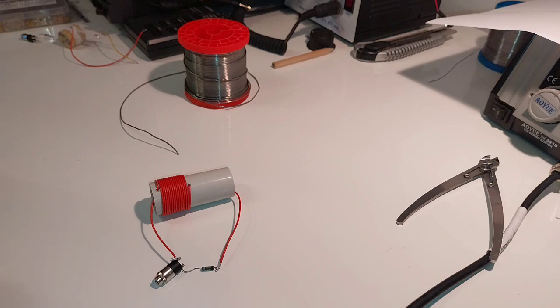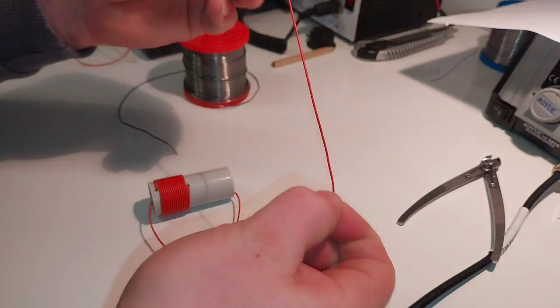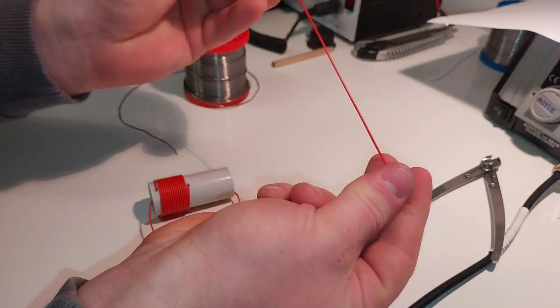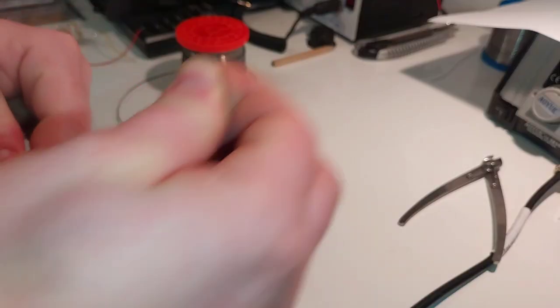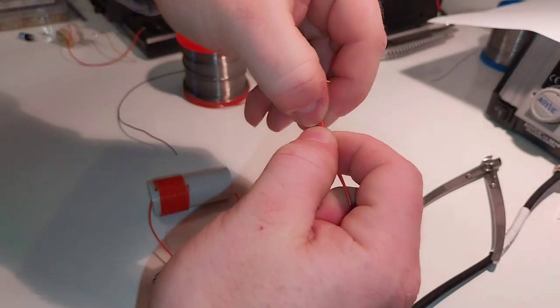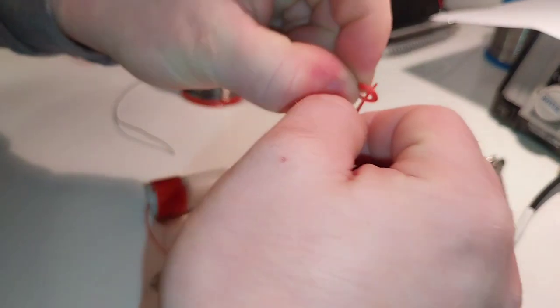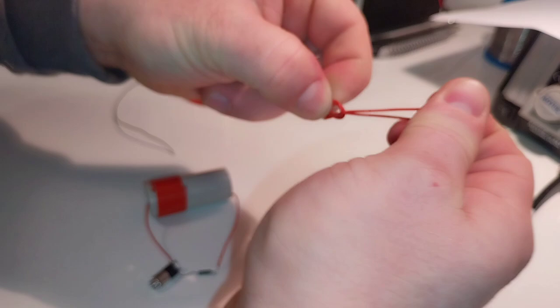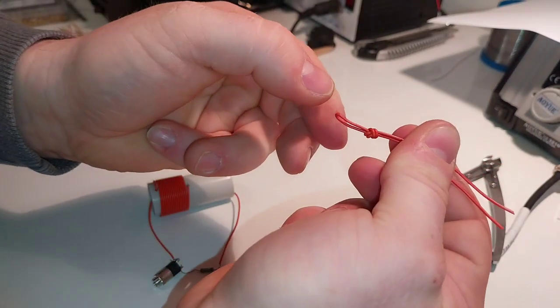The next step is to build a capacitor, and we can make a capacitor by ourselves. I'm using here 20 centimeters of random wire. Now we can make a random knot just like that.